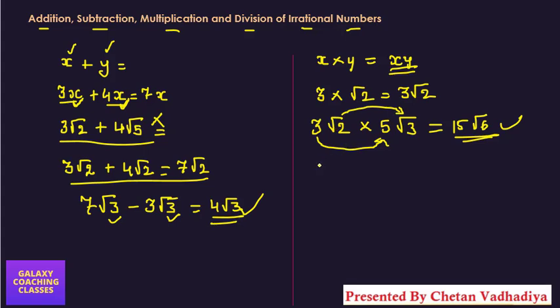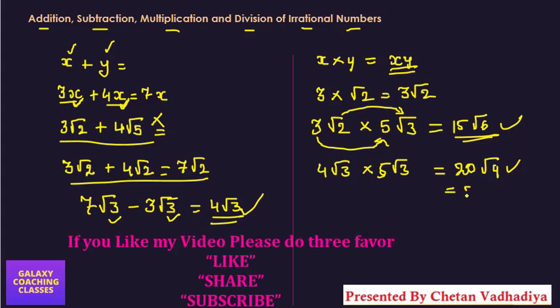If you are having 4√3 into 5√3, then what will happen? Let me tell you. 4 times 5 is 20, and √3 into √3, that is √9. But now we know √9, 9 is a perfect square number, so we can find out the root of 9. So that will become 20, √9 will be 3. So 20 into 3, 60 will come. So this way we need to multiply.